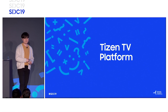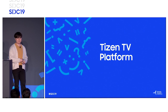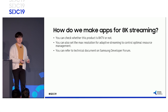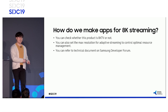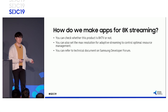Now it's my last topic: Tizen TV platform. This year, we added two new web APIs for 8K streaming. The first API lets users check whether the TV running their app can play 8K content or not. The other API is for setting the maximum resolution of an adaptive content, because resolution entries aren't mandatory in the manifest. Details of these two APIs will be posted on the Samsung developer forum.